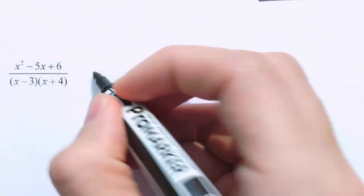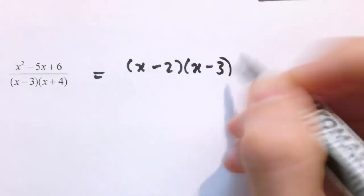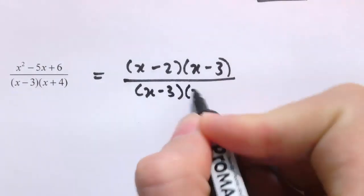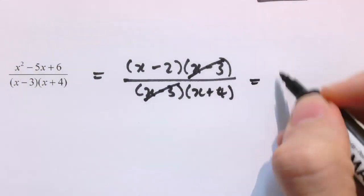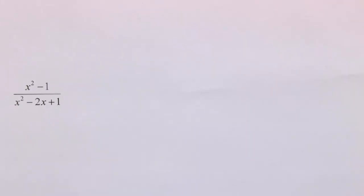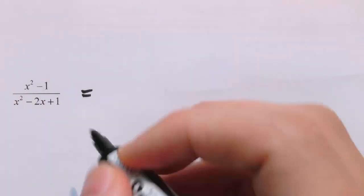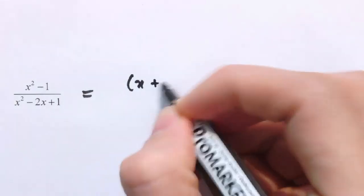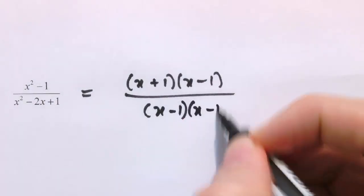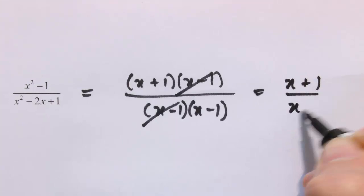Next, we've got another quadratic that needs to be factorised. You can work out the numerator as (x minus 2) times (x minus 3), and the denominator as (x minus 3) times (x plus 4). So (x minus 3) cancels to leave (x minus 2) over (x plus 4). In another example, we've got x squared minus 1 over x squared minus 2x plus 1. The numerator is the difference of two squares: (x plus 1) times (x minus 1). The denominator is (x minus 1) squared. Cancelling (x minus 1) top and bottom leaves (x plus 1) over (x minus 1).